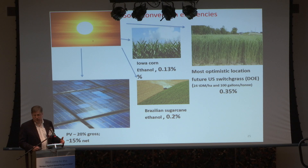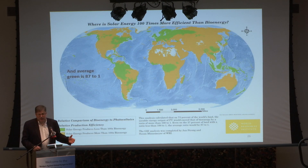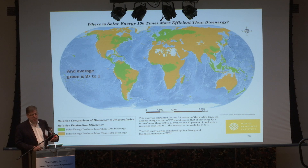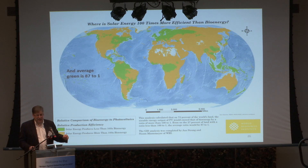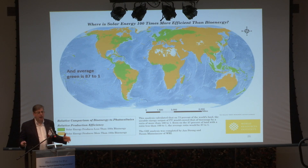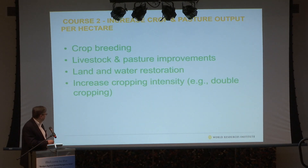Bioenergy requires huge amounts of highly productive land to produce small amounts of energy, and we simply can't afford it. With any meaningful amount of bioenergy, we will not be able to solve the food and forest crisis. On 75% of the world's land, you could produce at least 100 times more usable energy using solar today than bioenergy optimistically in the future. If you had 100 hectares of spare land and used one for solar cells and reforested 99, you'd get 100 times more greenhouse gas benefit for the same amount of energy.